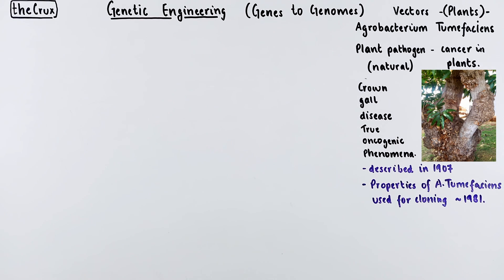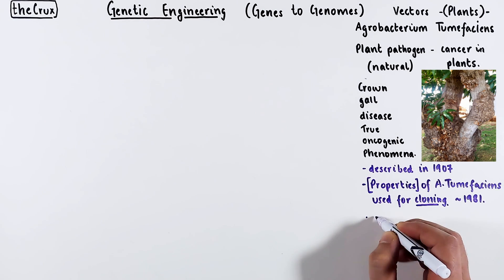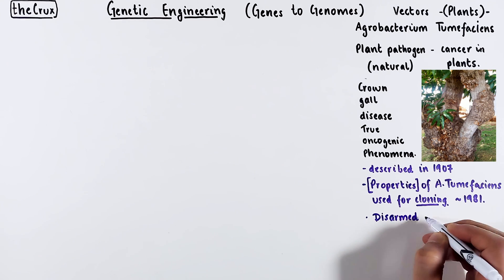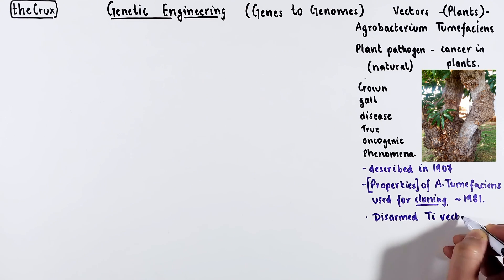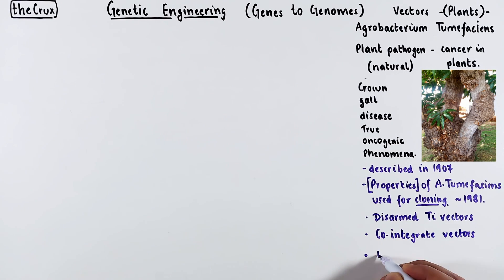I will discuss some of the cloning vector relevant properties, then transition into disarmed vectors, co-integrates, and binary vectors.